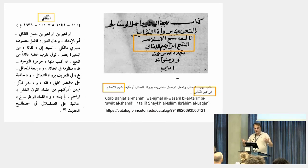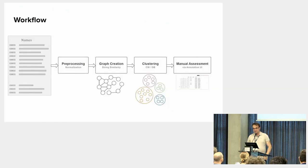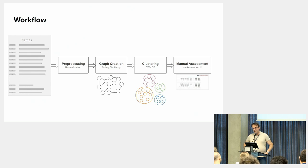They are the same person, and our goal is to match this information. In our database they are listed as different persons according to their sources, and we want to make them refer to the same entity. The proposed workflow is: start with pre-processing all names, then create a similarity graph, then try to cluster this graph, and finally perform some manual assessment and correction to correct the wrong results.